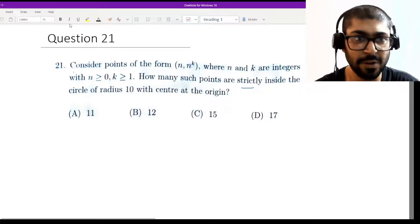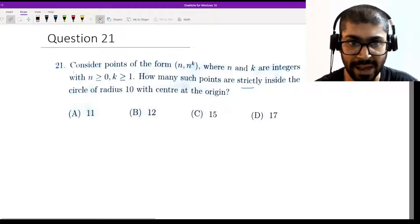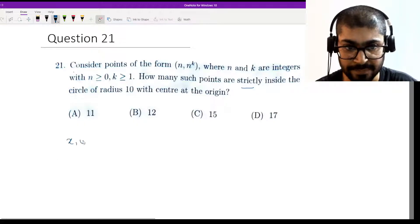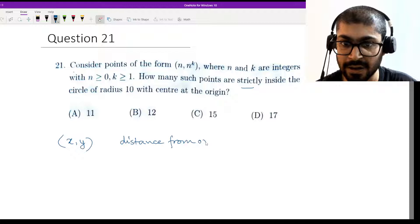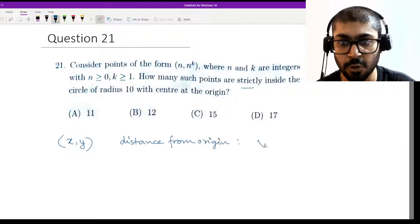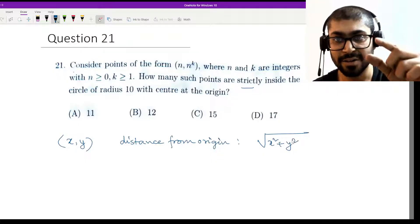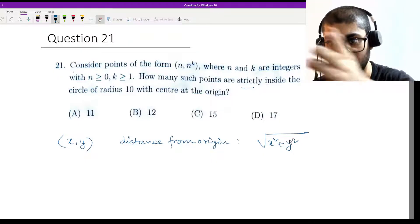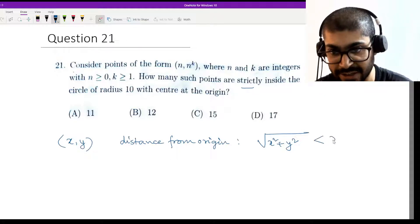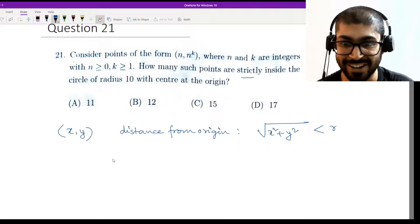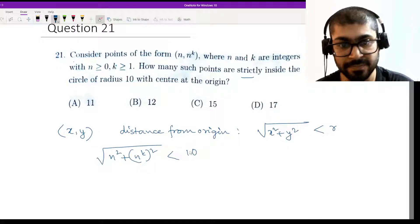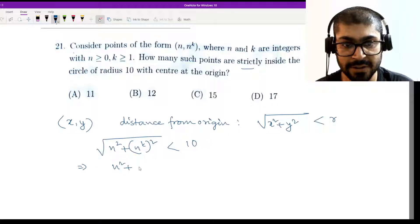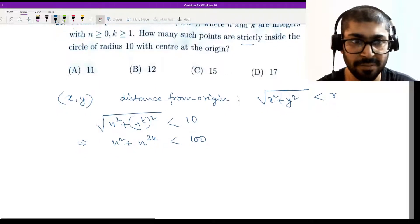For this we will just look into the distance formula at the beginning. If we have a point (x, y), then its distance from origin becomes √(x² + y²). If the circle is centered at the origin, then for the points to be strictly inside the circle this should be less than the radius. Then we put up the points that we have here: √(n² + (n^k)²) should be less than 10, or n² + n^(2k) should be less than 100.